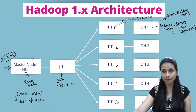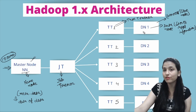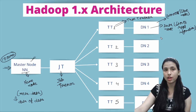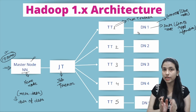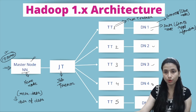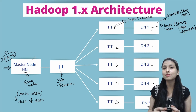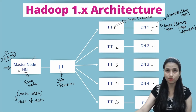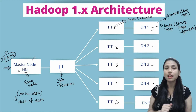The master node is also responsible for remembering what type of data is stored in each Data Node. When a file enters the system, it gets divided into chunks and distributed across Data Nodes. The master node remembers which file chunk is stored in which Data Node and what size it is — this is also called memory mapping.